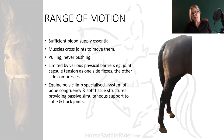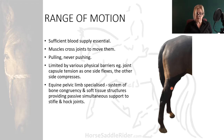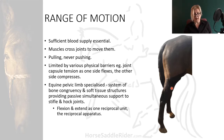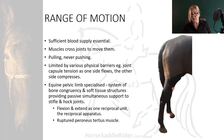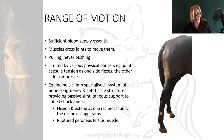The equine pelvic limb is specialized - it's a system of bone congruency and soft tissue structures providing passive simultaneous support to the stifle and hock joints. They flex and extend as one reciprocal unit, so whatever the stifle joint does, the hock joint must also do as a reciprocal apparatus. The problem with this system is that if the peroneus tertius muscle ruptures, there is almost 180 degree extension while there's still flexion in the stifle joint.